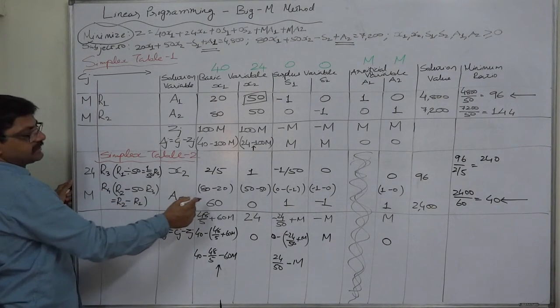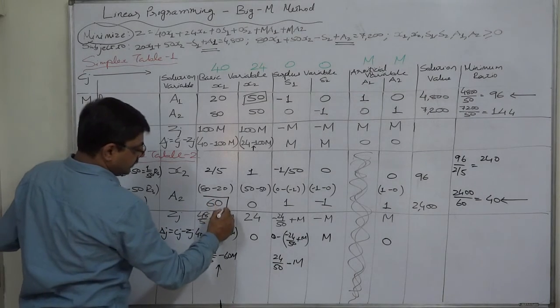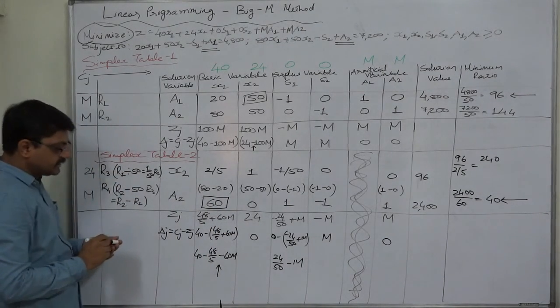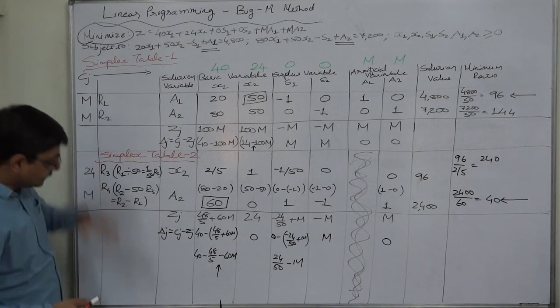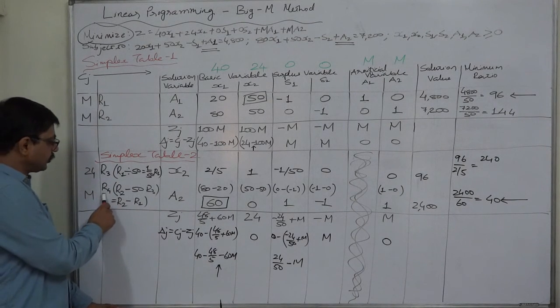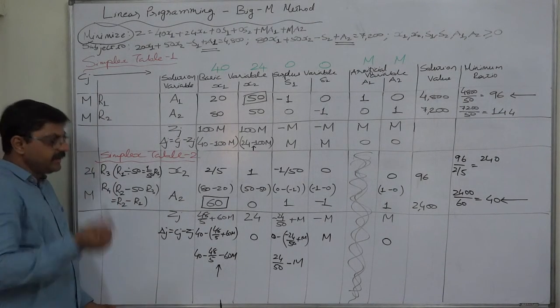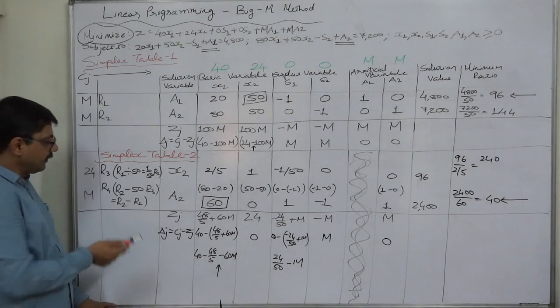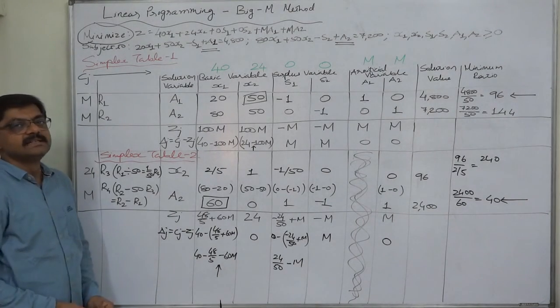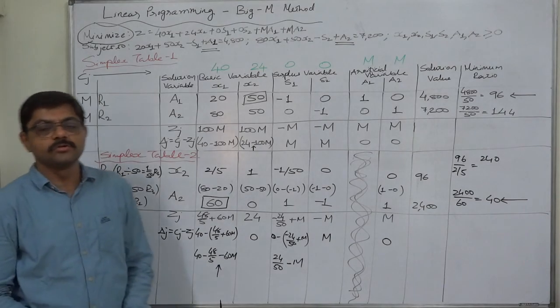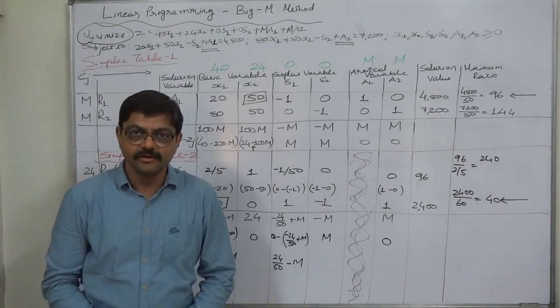X1 is the key column, r4 is the key row. Its common element, 60, becomes the key element. In the next table, our starting point will be the second row in the place of r4. That will be r6, and its formula will be r4 divided by 60. But we are going to discuss all these things in the next video lecture. Thank you.